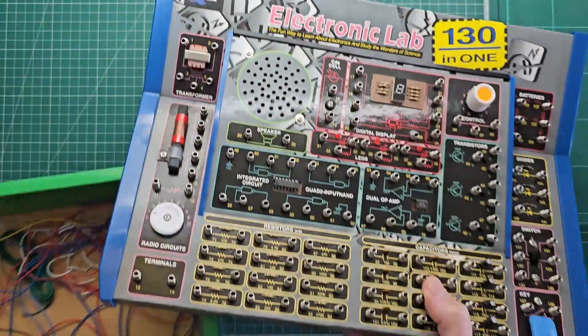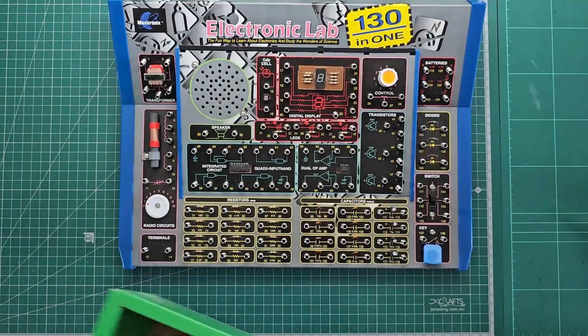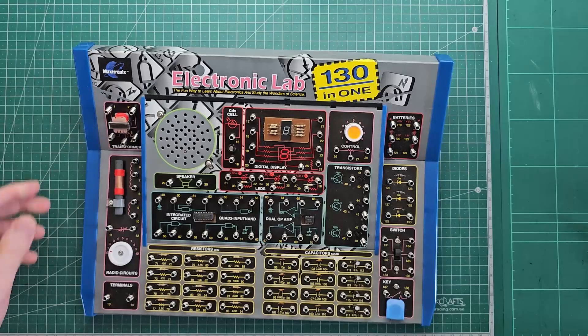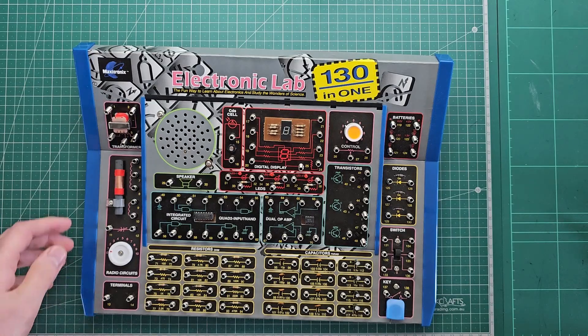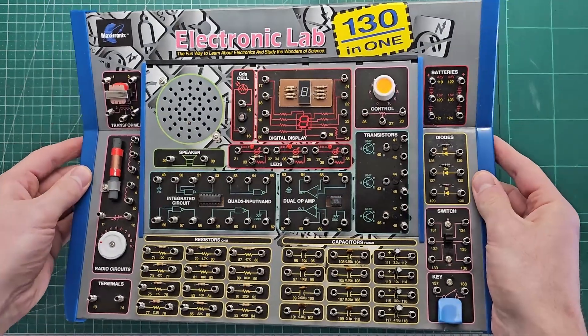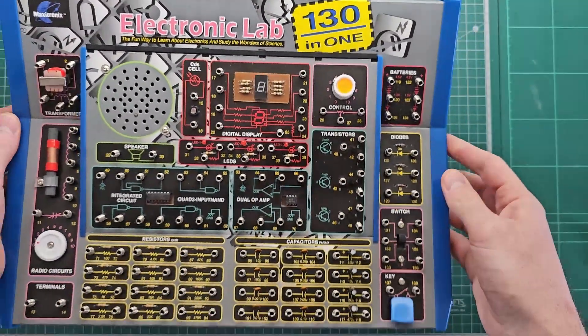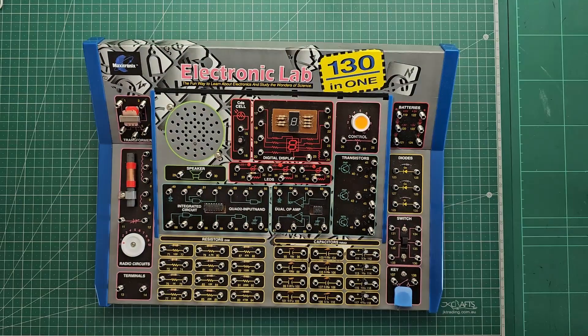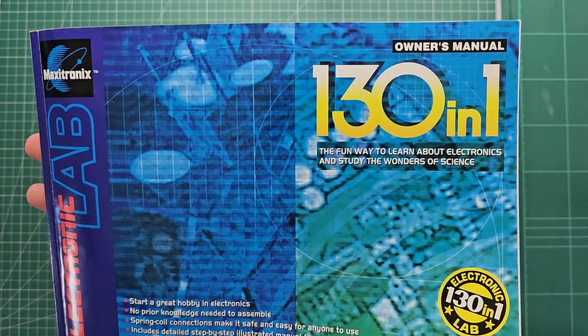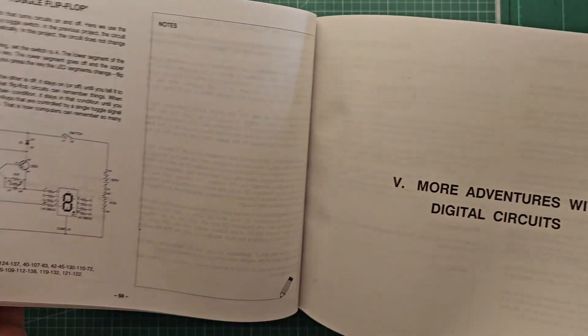As we can see, there's a few different components on the front panel and they're all connected to springs. The box comes with a bunch of wiring and we connect the springs together using the wiring. There's not much on the back except for two battery cradles which are a little bit corroded. The instructions include 130 different circuits that we could make and I'm going to start with a nice simple one.